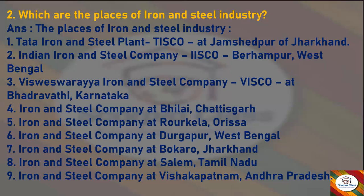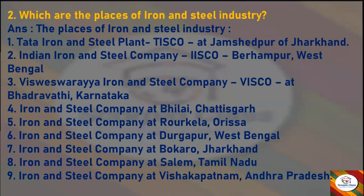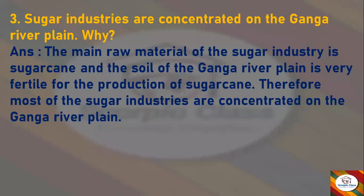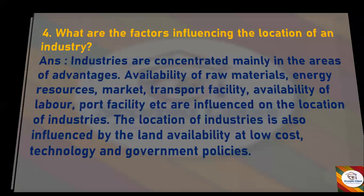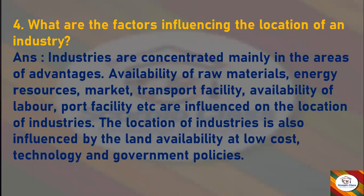Next question: Sugar industries are concentrated on the Ganga River Plain — why? Answer: The main raw material of the sugar industry is sugarcane, and the soil of the Ganga River Plain is very fertile for the production of sugarcane. Therefore most of the sugar industries are concentrated on the Ganga River Plain.